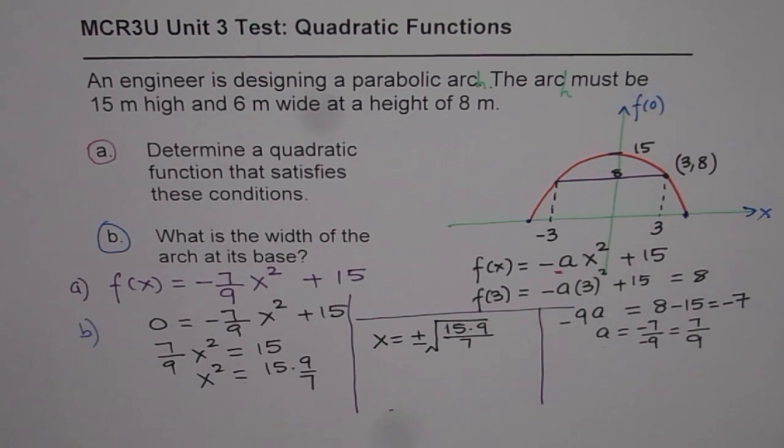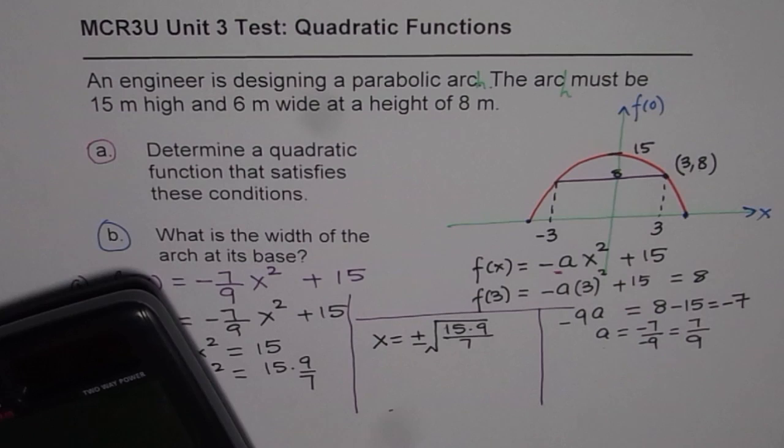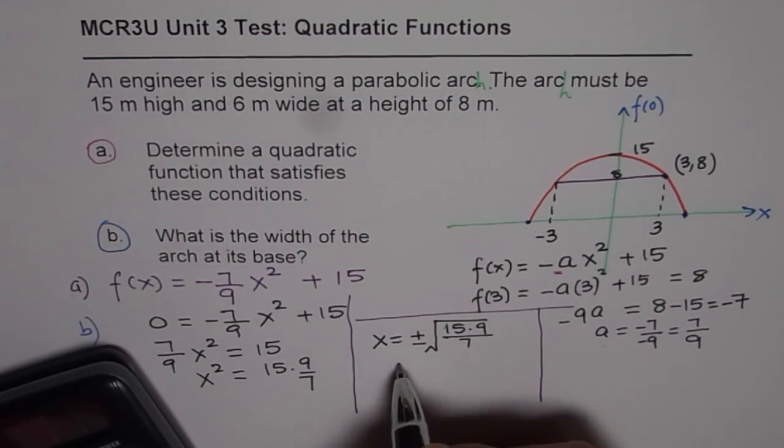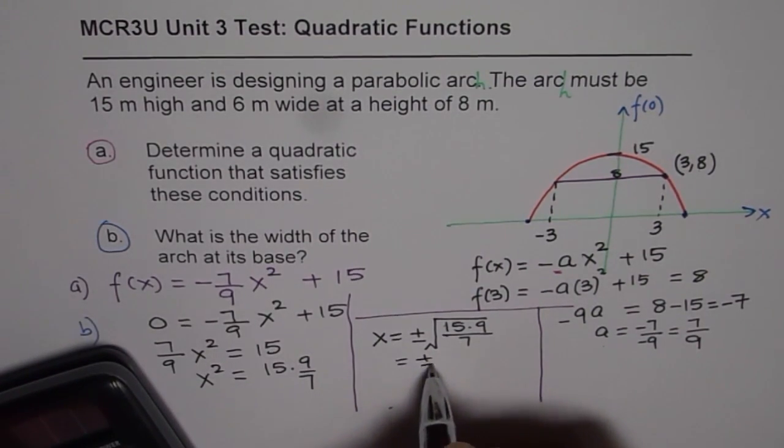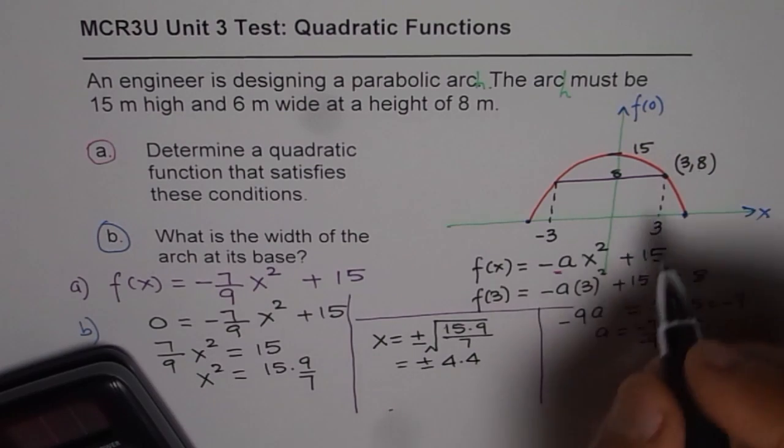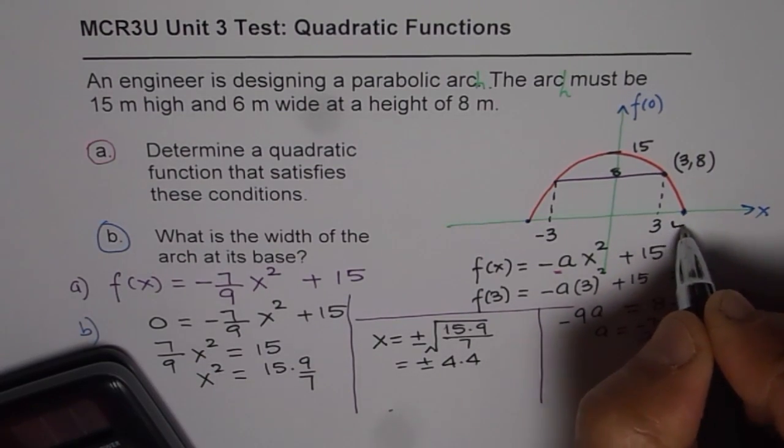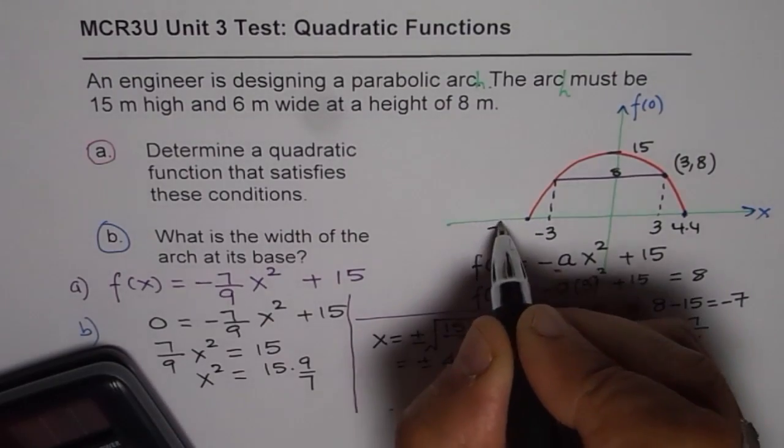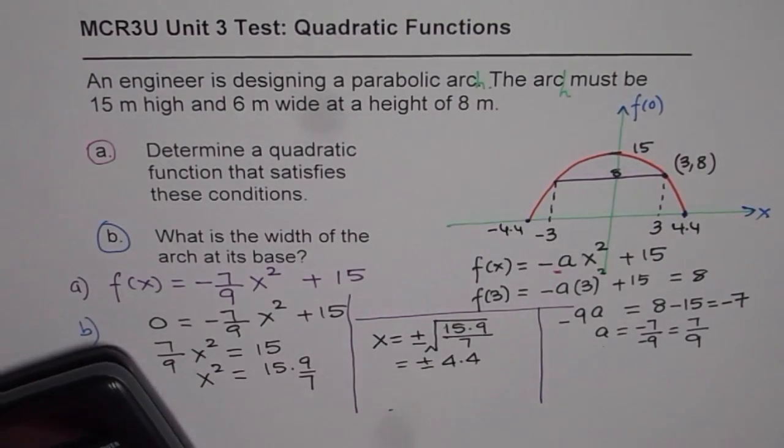So we can use a calculator and do the square root. So what do we get? We get within the square root, 15 × 9 ÷ 7 equals, it gives you 4.39. So we get approximately ±4.4. So plus and minus is very important. So this point is 4.4, this point is -4.4.